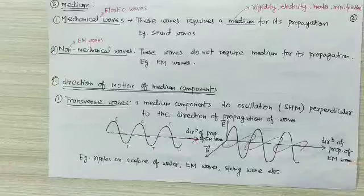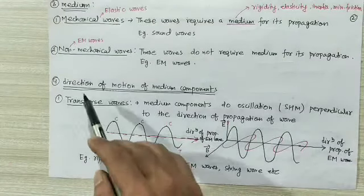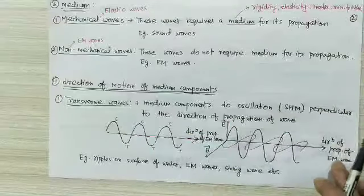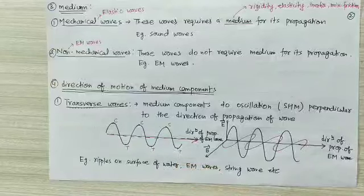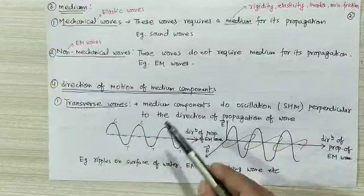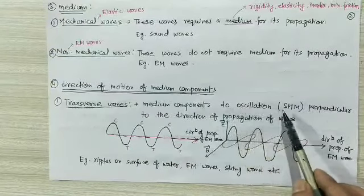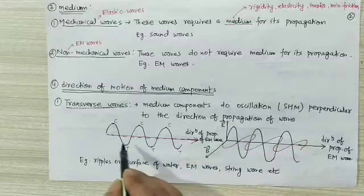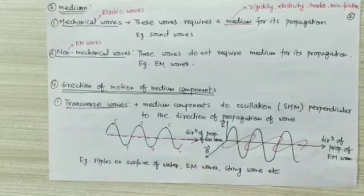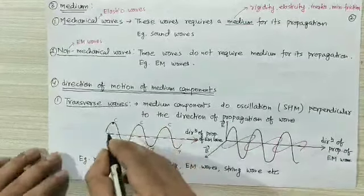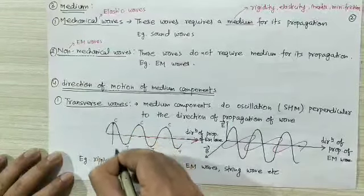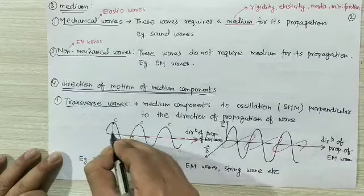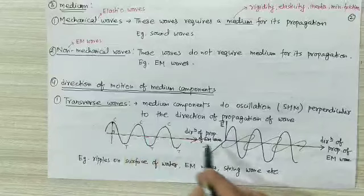Now see the fourth classification: classification of waves depending on the direction of motion of medium components (medium particles, or electric and magnetic fields). Waves are classified as transverse waves and longitudinal waves. In a transverse wave, medium components do oscillation or simple harmonic motion perpendicular to the direction of propagation of the wave. Consider the string wave example: the wave propagates from left to right, and the medium particles oscillate along a perpendicular line — perpendicular to the direction of propagation.